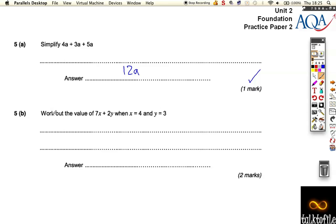This time we're asked to work out the value of 7x when x is 4 plus 2y when y is 3. Well, 7x is 7 times 4, which is 28.